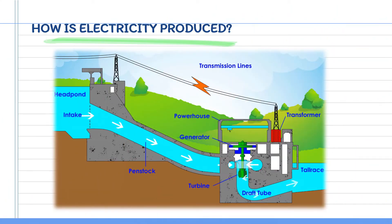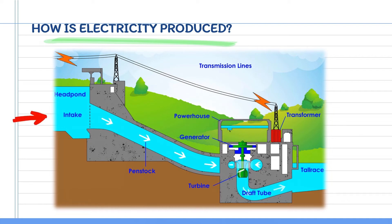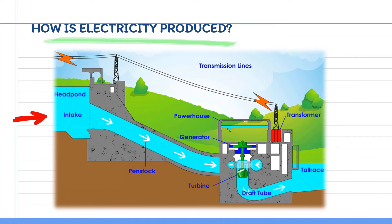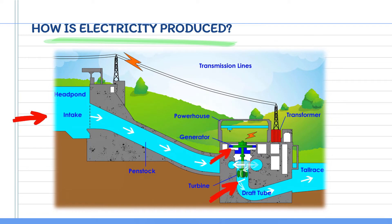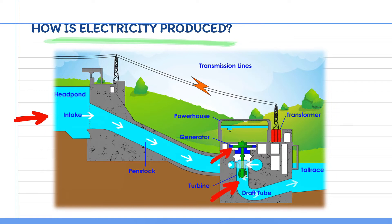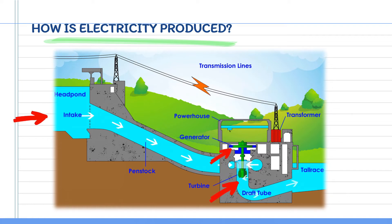Do you know how this hydroelectric power plant produces electricity? As the water falls from the reservoir, its kinetic energy increases and it flows very fast. The falling stream of water turns a fan-like device called a turbine. The force of falling water pushing against the turbine's blades causes the turbine to spin. A water turbine is much like a windmill, except the energy is provided by falling water instead of wind. The turbine converts the kinetic energy of falling water into mechanical energy. The turbine is connected to the generator shaft. When the turbine spins, it causes the generator to spin also. Generators convert the mechanical energy from the turbine into electric energy.